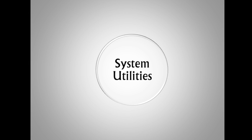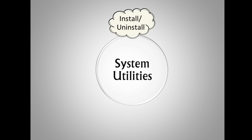Examples of System Utilities include Install and Uninstall. This allows you to install programs when you need them or uninstall programs when you don't need them.